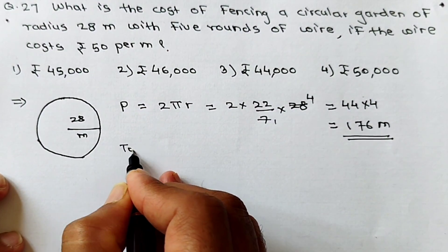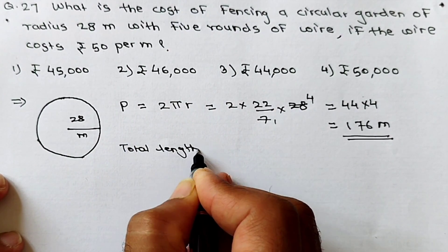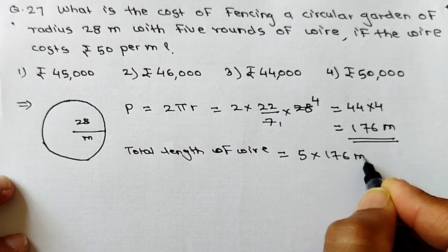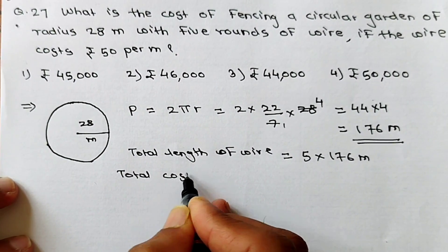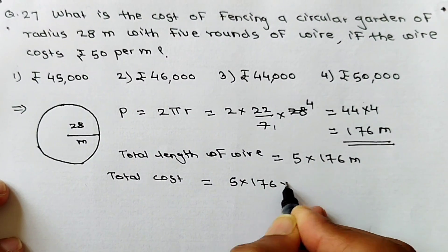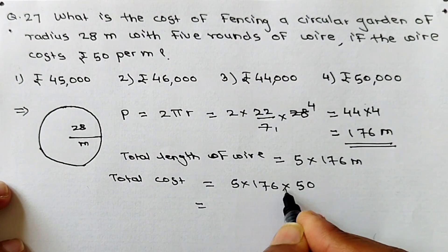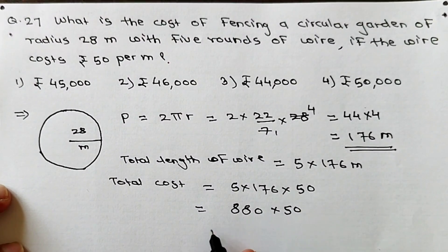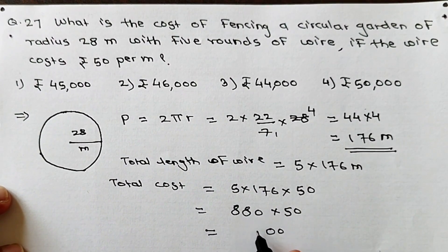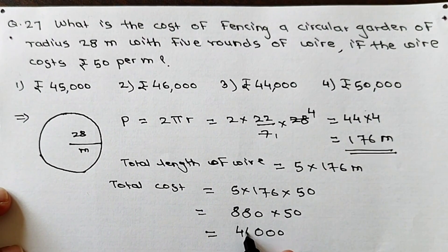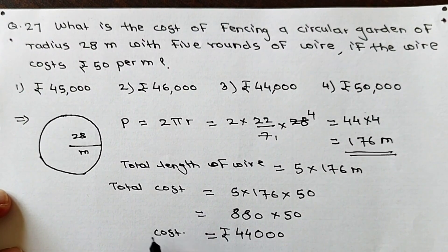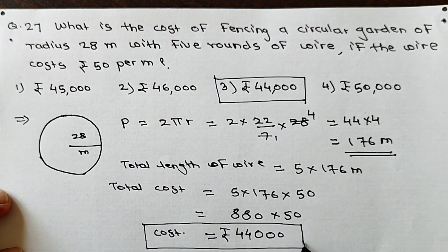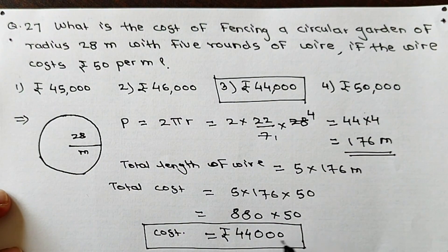Since 5 rounds are required, the total length of wire is 5 into 176 meters. The total cost equals total length into per meter cost, that is 5 into 176 into 50. Calculating: 5 into 176 is 880, and 880 into 50 gives 44,000. So the total cost for fencing this garden is rupees 44,000, which is option number 3.